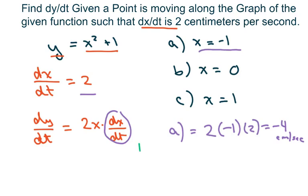For part B, I'm going to move it over so I can have room. It's the same thing: 2 times 0 times 2, which equals 0 centimeters per second.